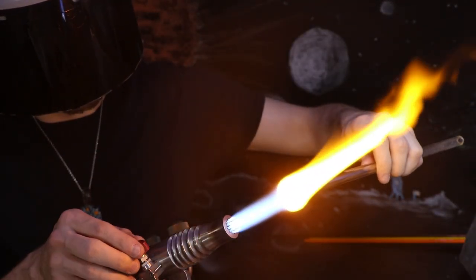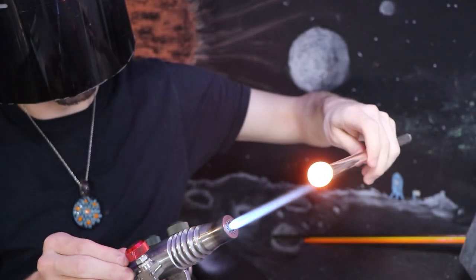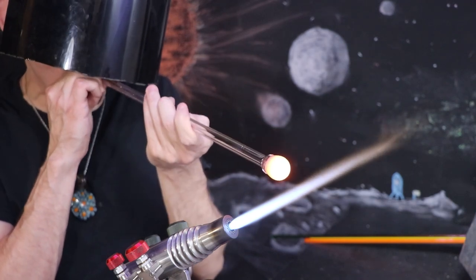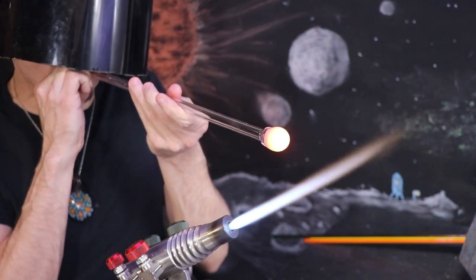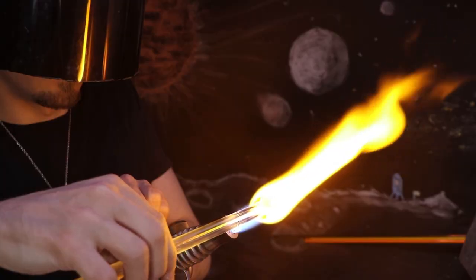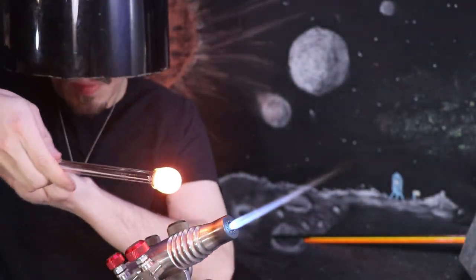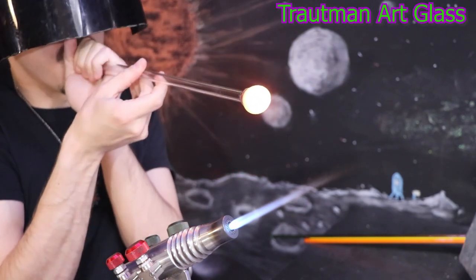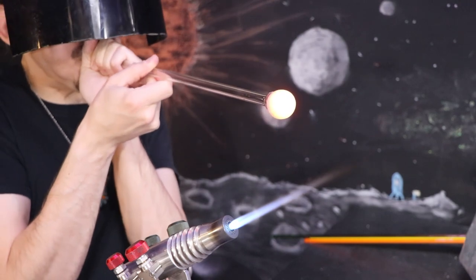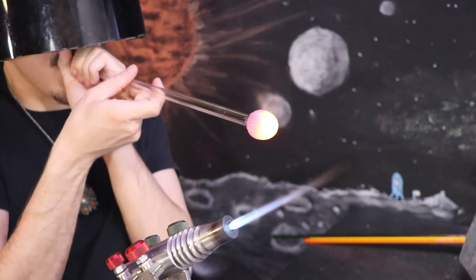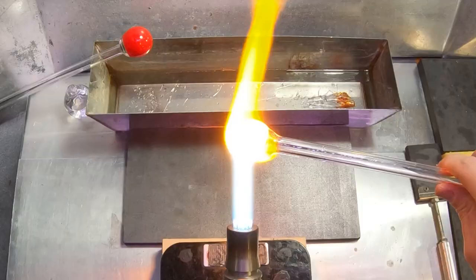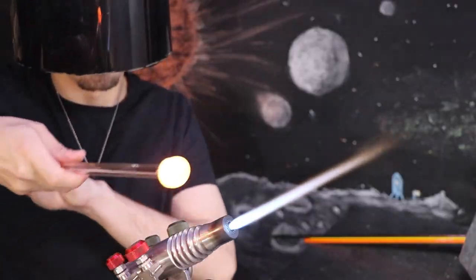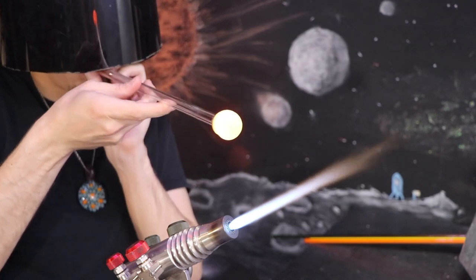To figure out which colors are going to work for you, a good way would be the sample packs. Some companies do offer a variety sample of their glass. I recommend the 4.5 pound pack from Troutman Art Glass. It's $150, but that's pretty good for 4.5 pounds of first quality glass. It is mostly transparent colors. If you're looking for opaque colors, I do recommend Glass Alchemy.